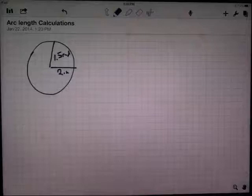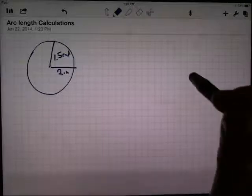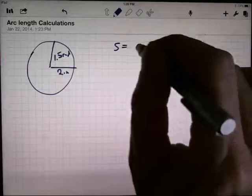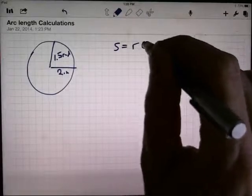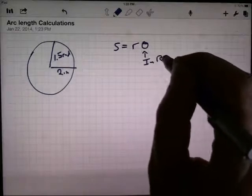Here's some examples of calculations involving arc length. The basic formula that we've run across is that the arc length is always equal to the radius times the angle. And the angle, remember, has to be in radians.